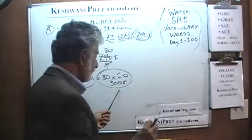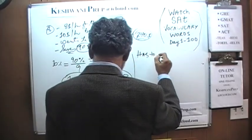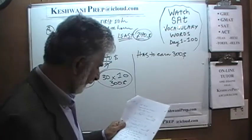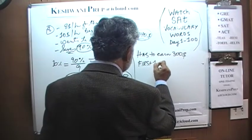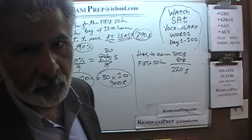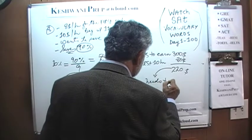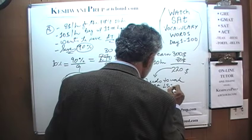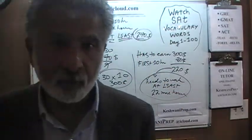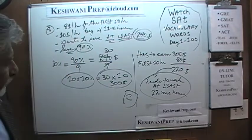So he has to earn $300 total — technically at least $300. The first 10 hours he makes $80. Which means he has to earn an additional $220 at the rate of $10 per hour. Since he is making $10 per hour, it simply means he needs to work at least 22 more hours in addition to the 10 hours already worked at the lower wage. The answer is C.